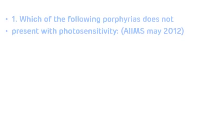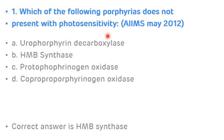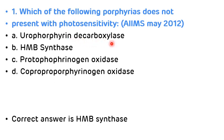MCQ from AIIMS May 2012: Which of the following porphyrias does not present with photosensitivity? Options: uroporphyrin decarboxylase, HMB synthase, protoporphyrinogen oxidase, coproporphyrinogen oxidase. The answer is HMB synthase, because HMB synthase deficiency leads to accumulation of ALA and PBG, which is more related to abdominal pain and neuropsychiatric symptoms — not photosensitivity.